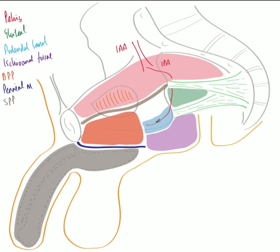Here we can see the pudendal canal — this fascial canal running alongside the ischiopubic rami. The internal pudendal artery, once in this canal, gives off a branch that goes towards the rectum: the inferior rectal artery. It travels from the pudendal canal to the rectum by passing through the ischioanal fossa — the fat-filled spaces on either side of the rectum.